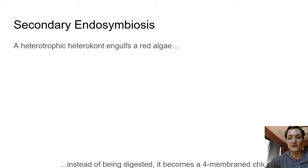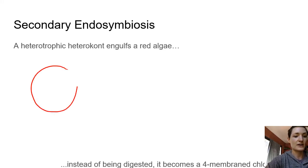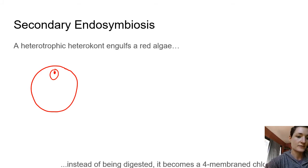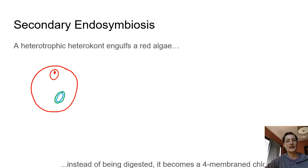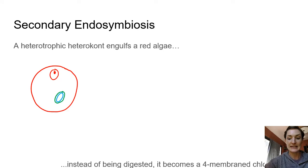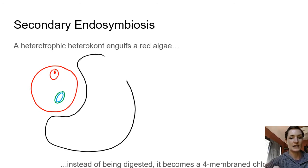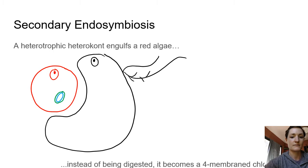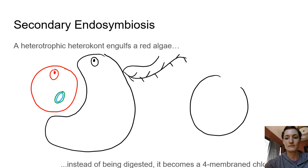Let's draw secondary endosymbiosis. We start with our red alga — it's singular — which has a nucleus and a two-membrane chloroplast. For red algae and descendants of primary endosymbiosis, those two membranes come from the cyanobacterium and the original eukaryote that engulfed it. This red alga is going to get eaten by an oomycete, which also has a nucleus and heterocont flagella.